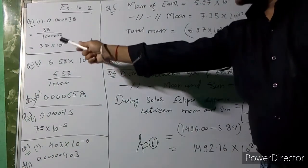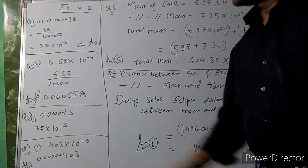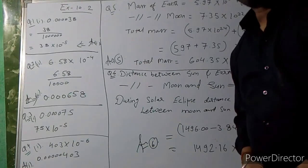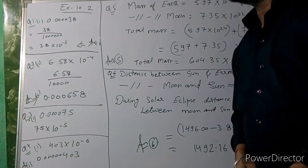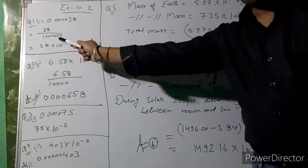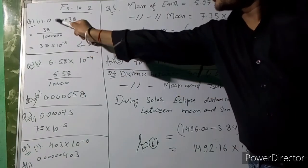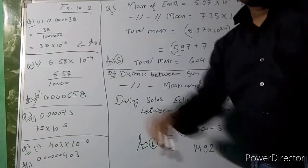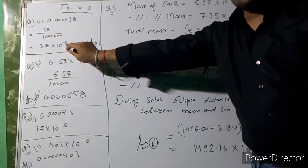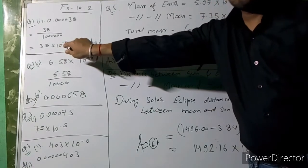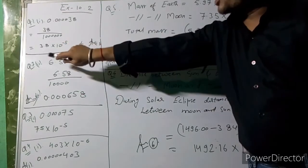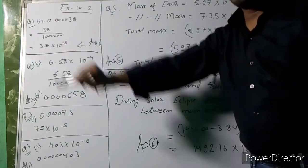Now exercise 10.2 on Exponents and Powers — this is about standard form and normal form. Question 1: convert 0.0000038 into standard form. Count the zeros: 1, 2, 3, 4, 5, 6 — so there are 6 zeros. Place the decimal after 3 to get 3.8, and since we moved 6 places but one is already accounted for, we count 5 remaining. The answer is 3.8 × 10⁻⁵.